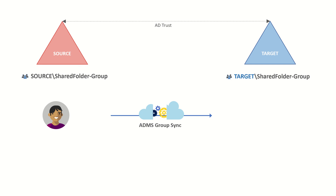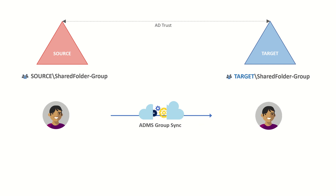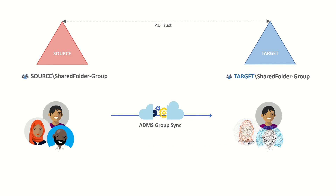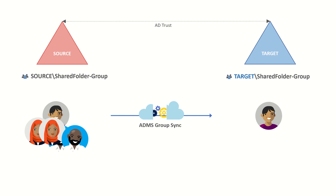Throughout the duration of the project, ADMS is going to continue syncing group memberships. What this means is that management of group membership must take place in the source. For example, if you try to remove users from the target domain group, they're just going to get added back at the next ADMS sync cycle.